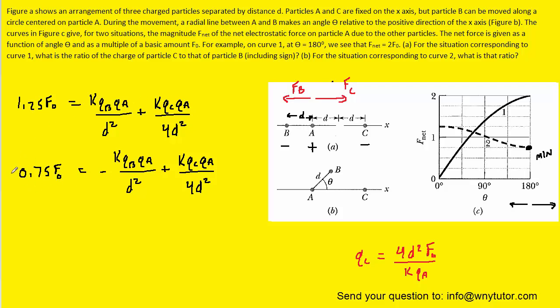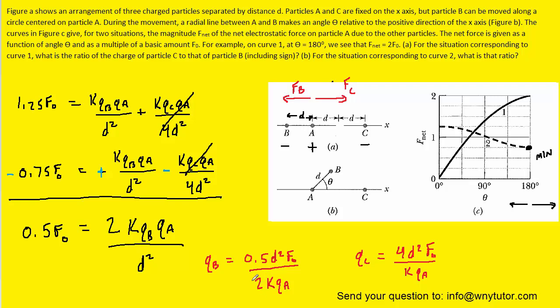Now let's return to these two equations. Let's do a little algebraic trick. Let's multiply both sides of the bottom equation by negative 1, so we're going to change the sign of each term, and then we're going to add the two equations together. And as before, we're going to rearrange this equation, but this time solve for QB rather than QC. Notice that 0.5 divided by 2 can be written as 0.25.